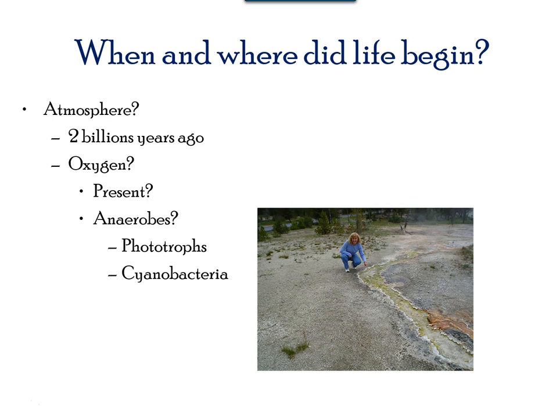Prokaryotes were the first inhabitants on Earth and appeared at least 3.9 billion years ago. Today, we find them everywhere — they are ubiquitous. There are almost more prokaryotic cells inside and outside our body than the number of human cells within our body, because they are much smaller in size than the regular human cell.